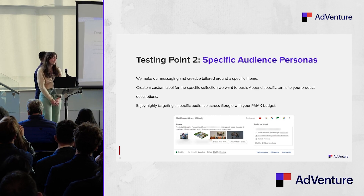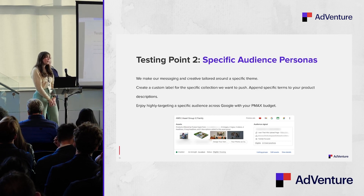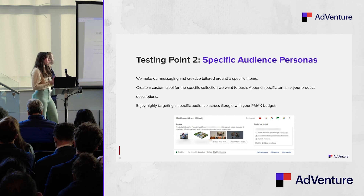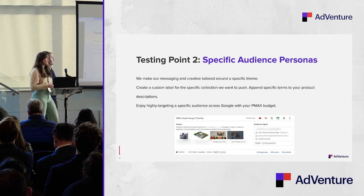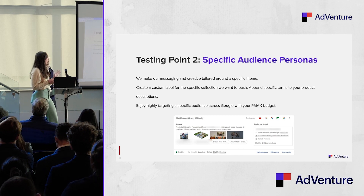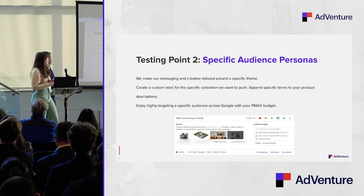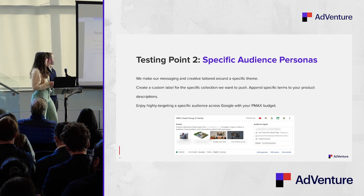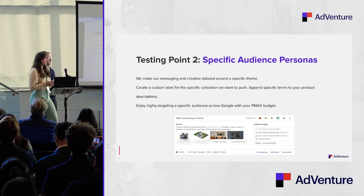The second testing point is a middle-of-funnel specific audience test. If you have target audiences that are pretty stable for your brand, you can build out your creatives, messaging, and even your product feed to a specific collection of products you want to target with that audience. You create a highly targeted Performance Max campaign — done at the campaign level so we can get the data — specific to that audience persona, tying the audience signals, assets, creative, and messaging into that perfect storm to hit that consumer with that interest.